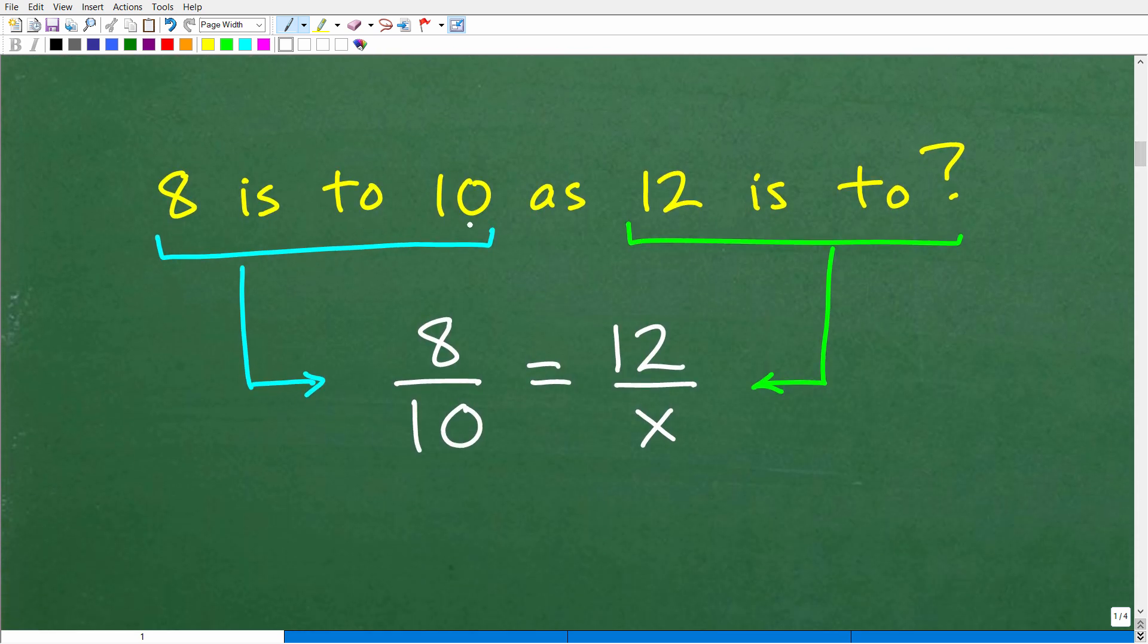So 8 is to 10, all right? So basically, you're going to say 8 is to, okay, this to is the fraction bar. So 8 is to 10 as, all right, so that's an equal sign, 12 is to what number? Okay, well, we can always use a variable to represent any number that we want in algebra, so we'll use the variable x. So 8, let's just kind of read this together, 8 is to 10 as 12 is to what, okay, what number?